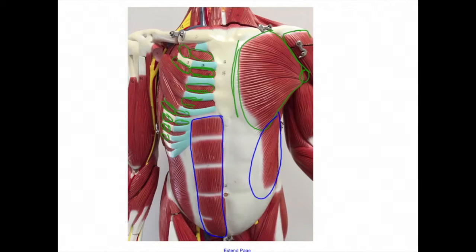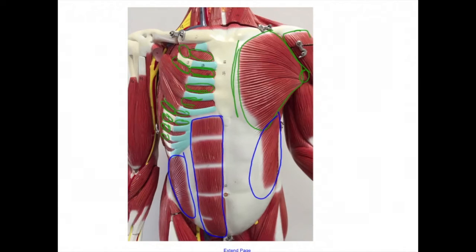Deep to the external oblique is the internal oblique, located here. The origin is the inguinal ligament and iliac crest. The insertion is the lower three ribs, xiphoid process, linea alba, and pubis. The action is to compress the abdominal viscera and flex the vertebral column.